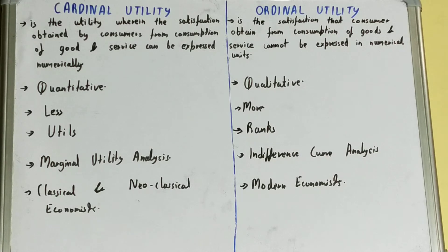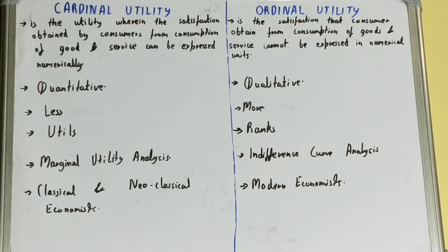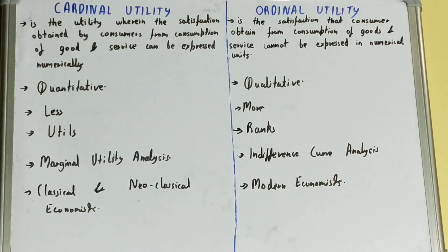If we talk about measurement, cardinal utility is measured in UTILs, but ordinal utility is measured in ranks.